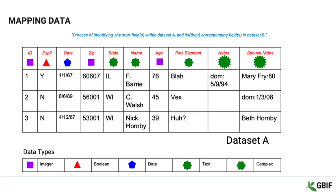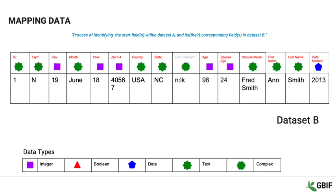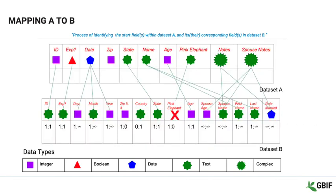In this example, dataset A has 10 columns. There are some integer fields represented by the purple squares, some Boolean fields represented by the red triangles, some date fields represented by blue pentagons, some text fields, and some complex fields. Dataset B has a different set of fields — 15 in total. What we need to do is identify which fields in dataset A match which fields in dataset B.